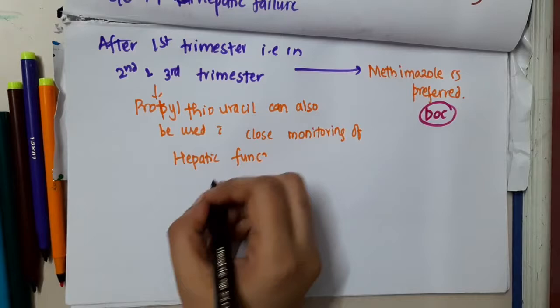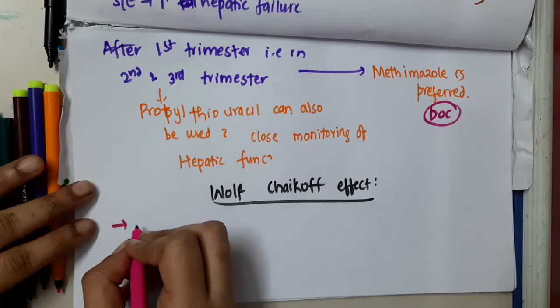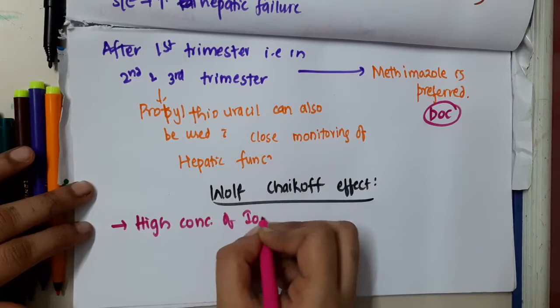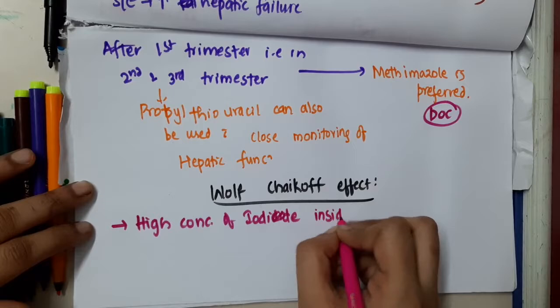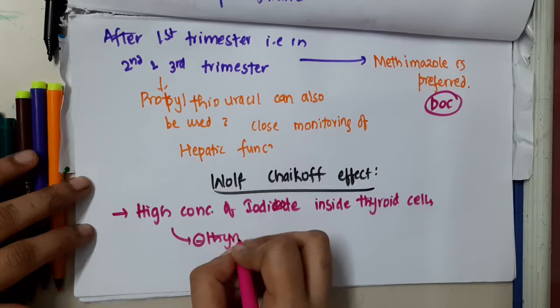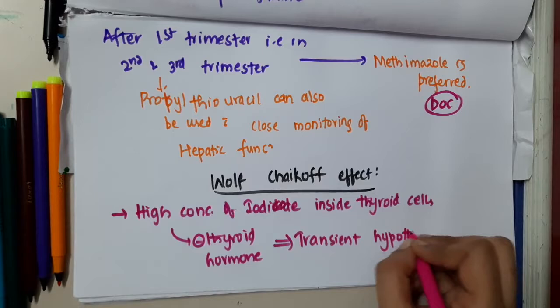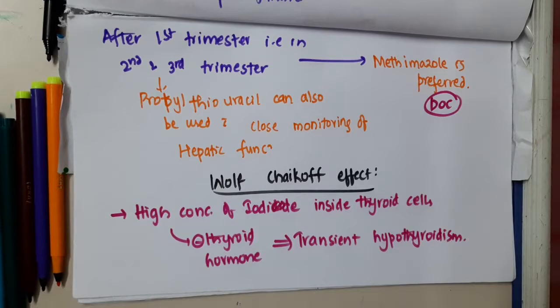Hello friends, what is Wolf Chekhov's effect? Wolf Chekhov's effect is: whenever there is high concentration of iodide inside the thyroid cells, this will inhibit the thyroid hormone synthesis, and thus you will see transient hypothyroidism because of high dose concentration of iodide inside the thyroid cells. This is about Wolf Chekhov's effect.